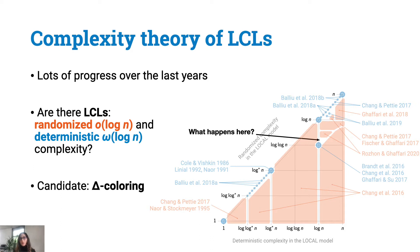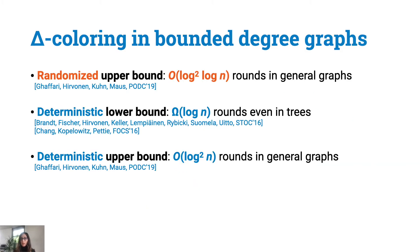While we do not have any problem with a proof that it is strictly contained in this white region, we have some good candidates, such as the delta coloring problem. For this problem, we know that in bounded degree graphs there is a very fast randomized algorithm requiring only poly log log n rounds in the local model. For deterministic algorithms, while we know an omega of log n lower bound, we only know an order of log squared n upper bound. So understanding the right complexity of delta coloring could help in understanding something more general about locally checkable problems.